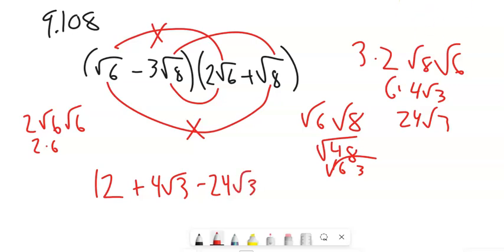And then if I do this, that was that multiplication. Now if I do this last multiplication, negative that times that, negative 3 root 8 times root 8. That's just an 8. So negative 3 times 8 is negative 24.